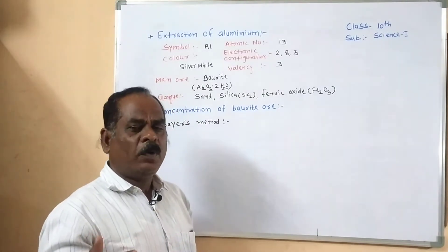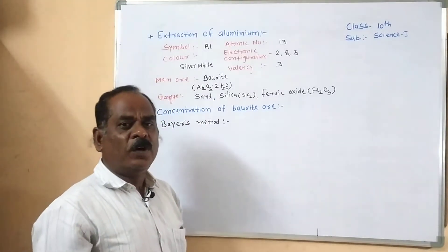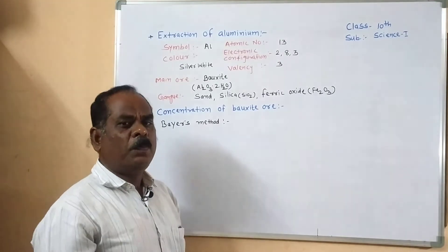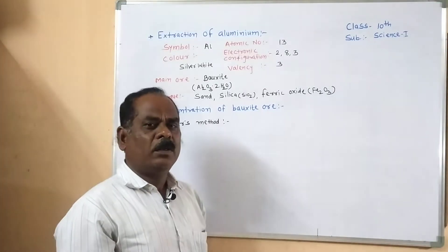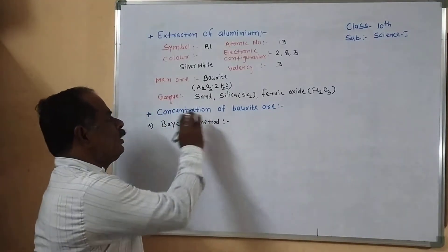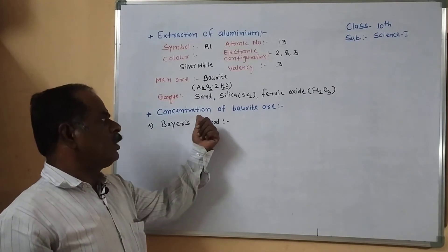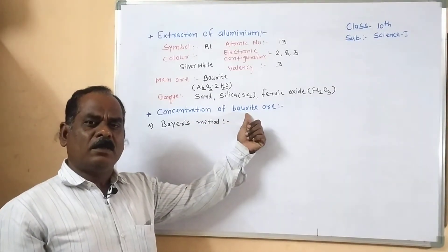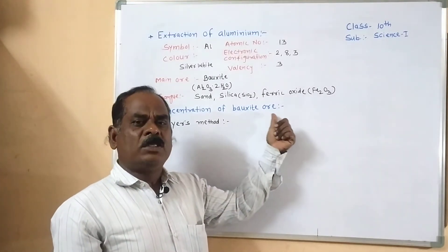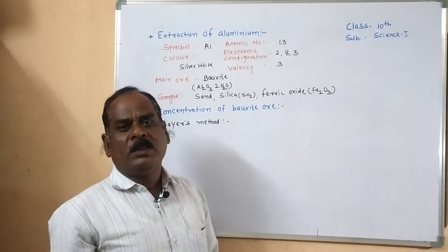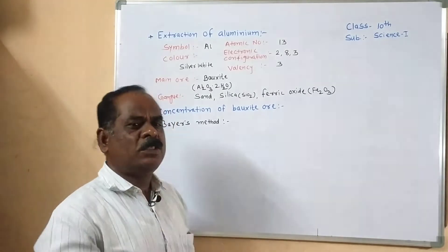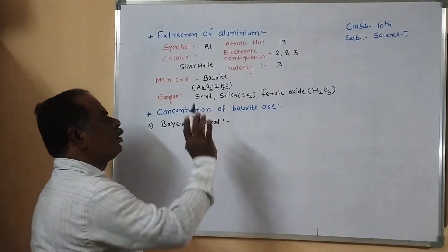In the extraction of aluminum from bauxite, we first remove the impurities. The process by which impurities are removed is known as concentration of ore. Two steps are involved in the extraction of aluminum: the first is the concentration of bauxite ore, and the second is the electrolysis of alumina.